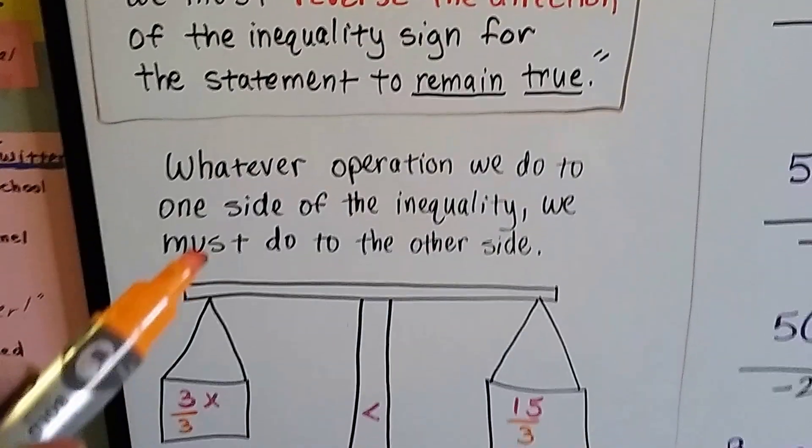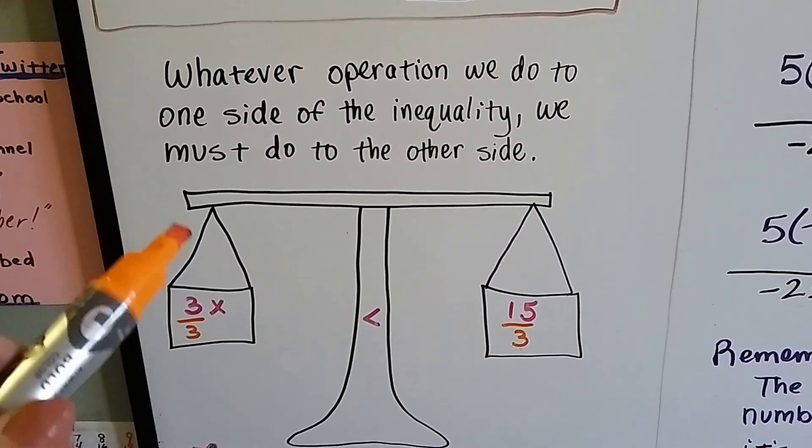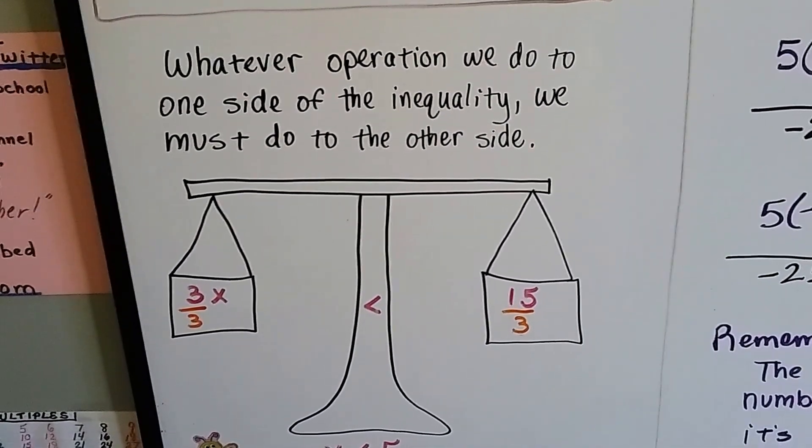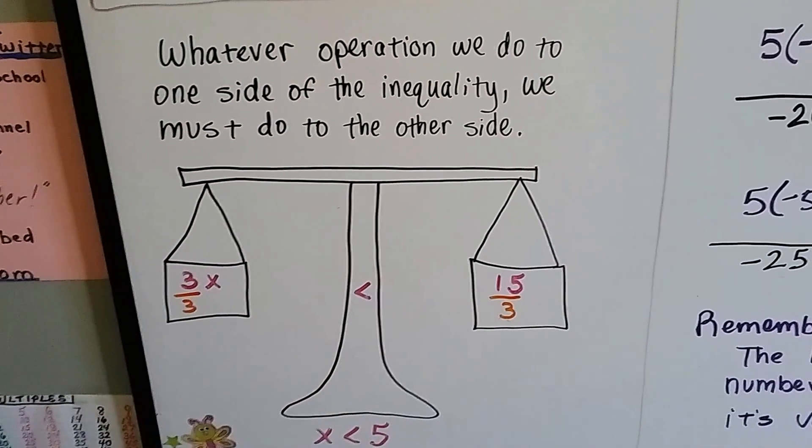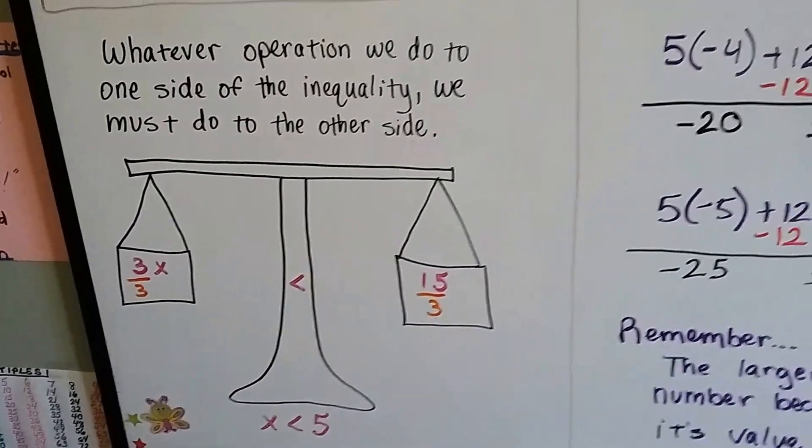But also remember that whatever operation we do on one side of the inequality we must do to the other side. That's when we're doing inverse operations and we're trying to eliminate to find the value of the variable.